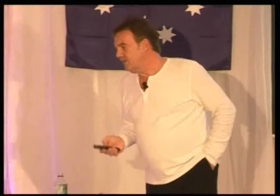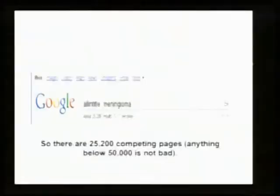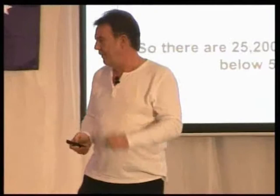Can we target that keyword? How much competition is there? To find out, you go to Google and type in 'allintitle:' — that's all one word — colon, and then the keyword. In this case, meningioma. That shows us how many competing pages there are — how many competing website pages have that keyword in the title. In this case there were 25,200 competing pages. Anything below 50,000 is good; below 30,000 is better. But we wanted to narrow it down a bit more.